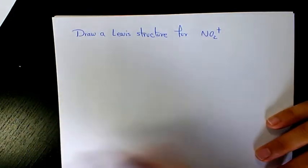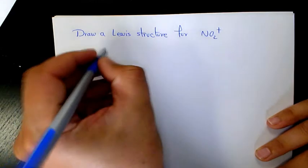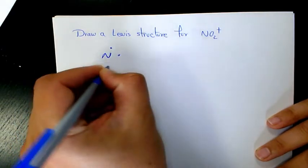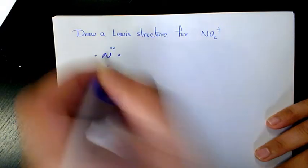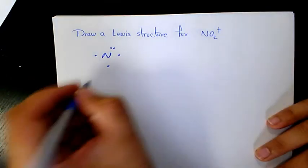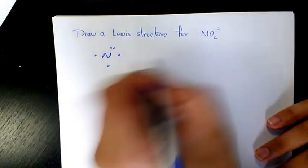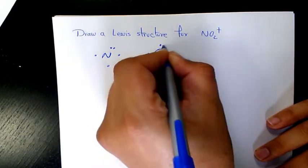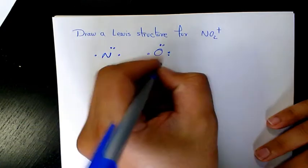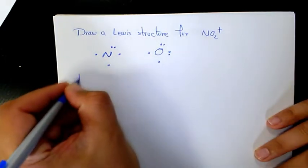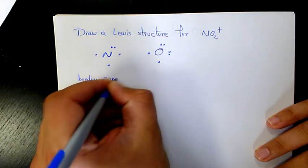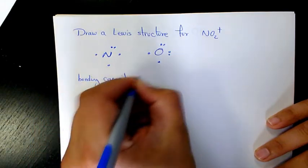Nitrogen has five valence electrons and the bonding capacity is going to be three. And oxygen is one, two, three, four, five, six and has two bonding capacity.